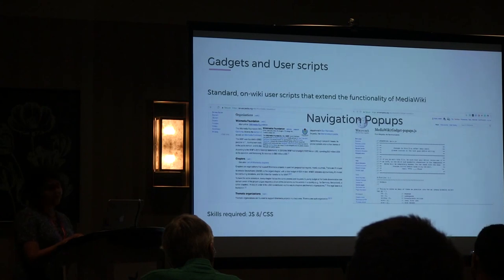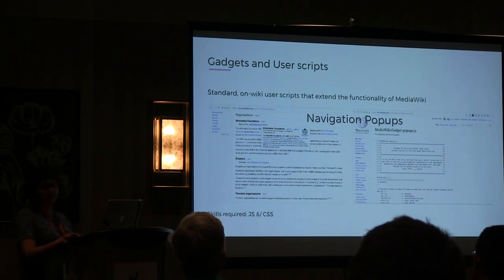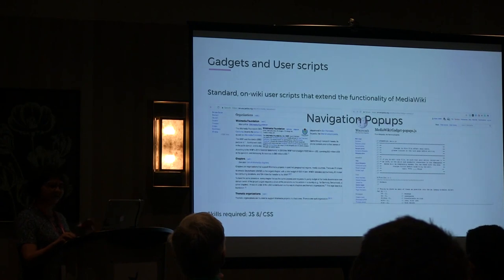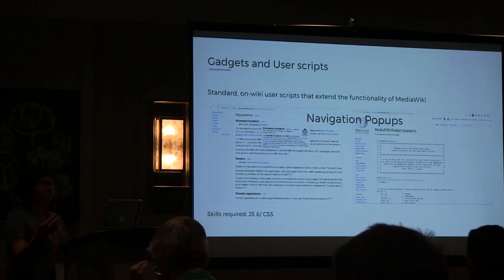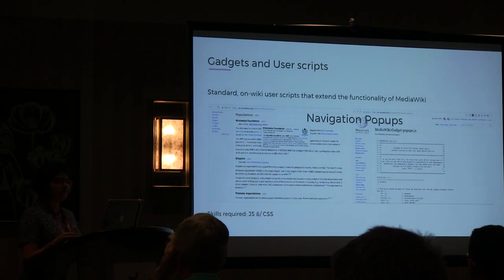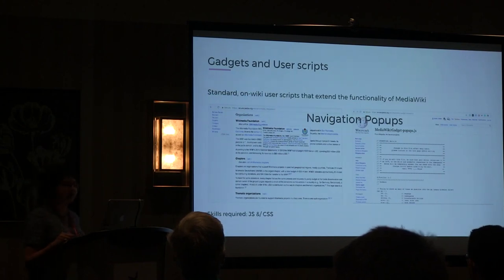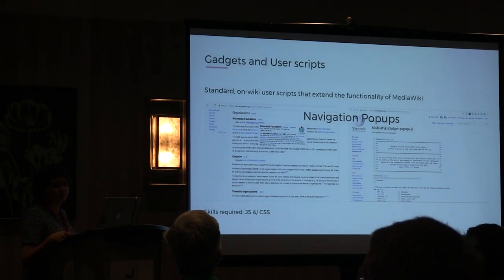Then we have gadgets and user scripts. They are JavaScript-based methods that extend the functionality of MediaWiki. They are similar to extensions, but the difference is that the code for user scripts lives on-wiki, whereas extensions are stored off-wiki. When a site admin thinks a user script is going to be useful for many people, it gets promoted to a gadget. An example of a gadget is navigation popups — the popup that shows up when you hover over a link on a wiki page. You can actually view the code for a gadget by going to its corresponding page on the wiki.